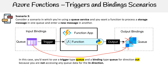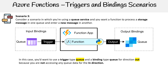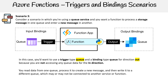Just imagine we took the correct icon and placed it in the output position as well — sorry for that graphical error. In this case, you'll want a trigger type of queue and a binding type of queue for the out direction, because you're not accessing the queue in the in-direction. You read the data from one queue, process it to create a new message, and then write to a different queue, which may or may not be connected to another service or function.